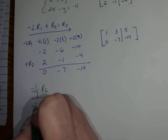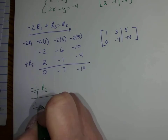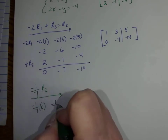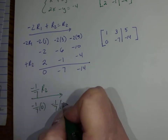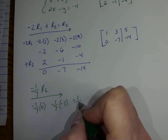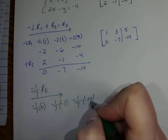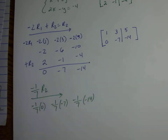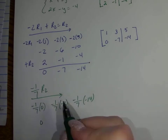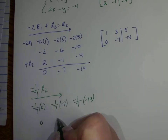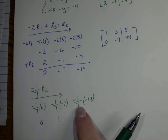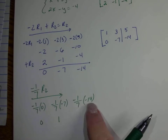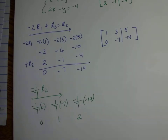So that gives me negative 1/7 times 0, negative 1/7 times negative 7, and negative 1/7 times negative 14. Negative 1/7 times 0 is 0. Negative 1/7 times negative 7 is 1. And negative 1/7 times negative 14 is 2.